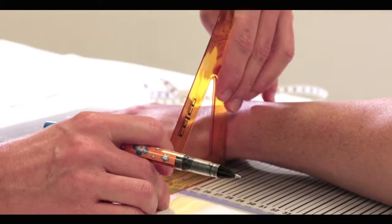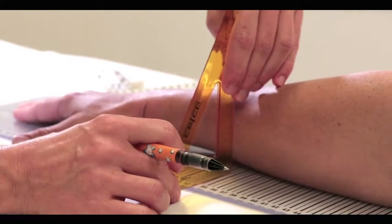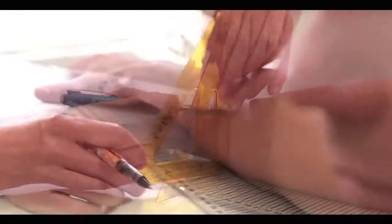Repeat on the radial or thumb side of the arm. Again, using the same zero point, in this case being 24.5 centimeters on the board.